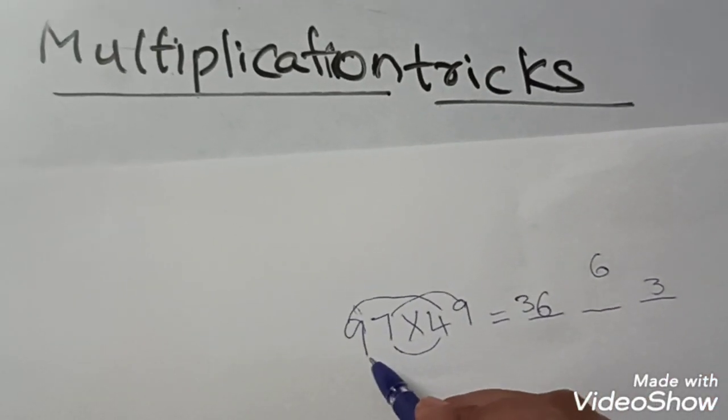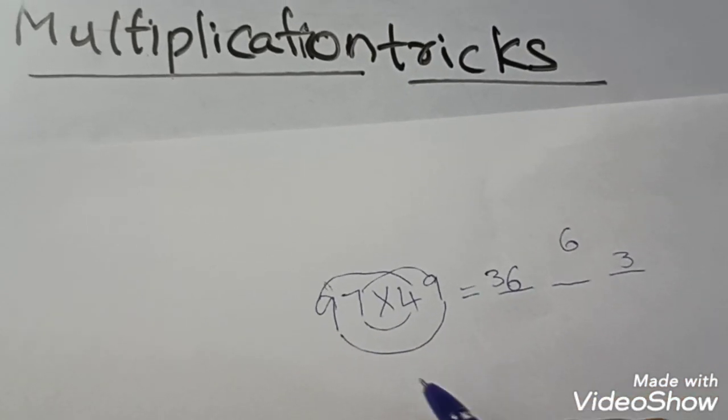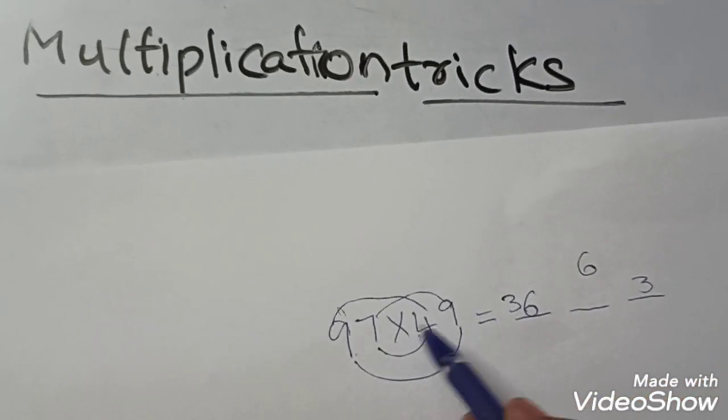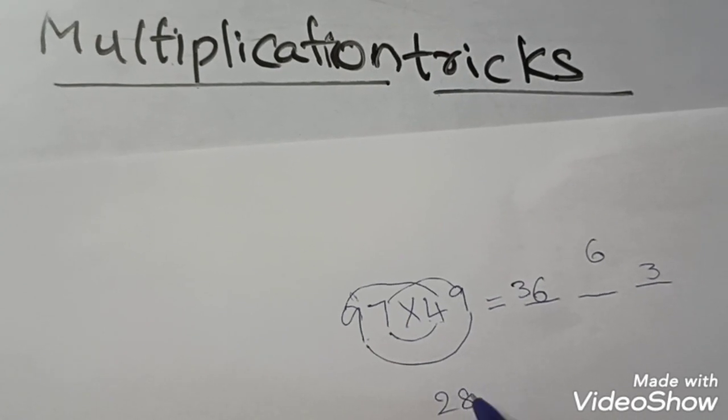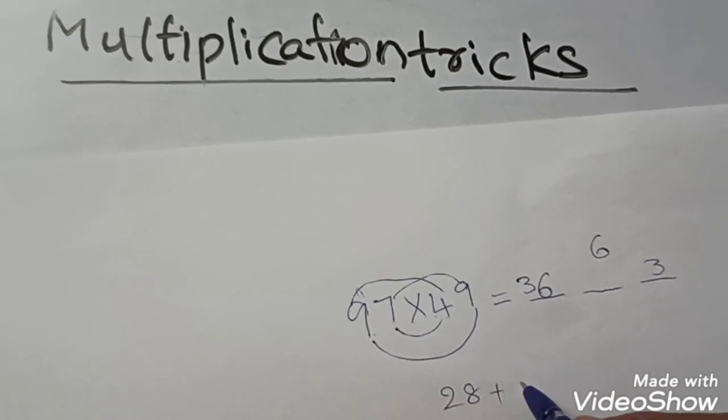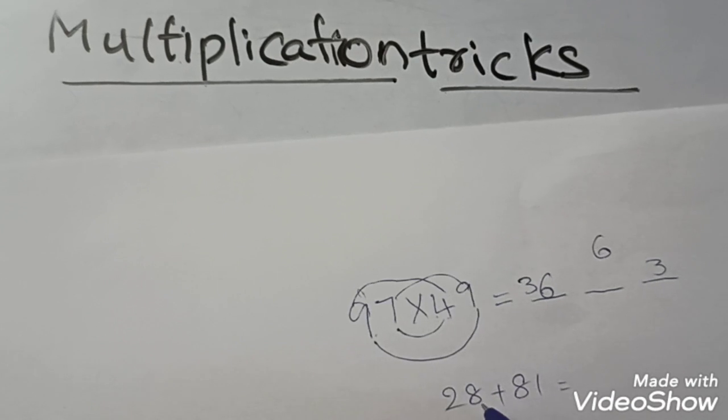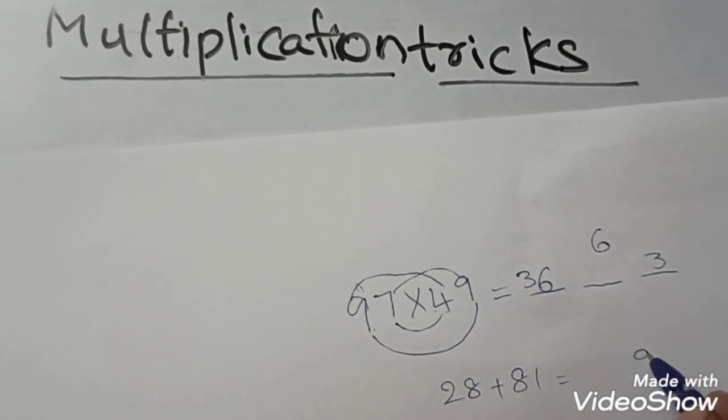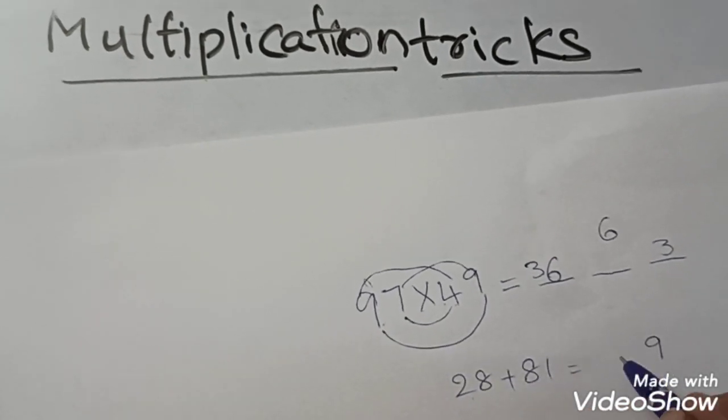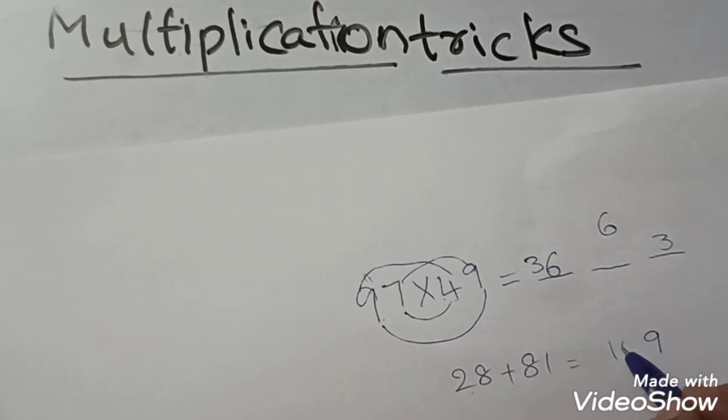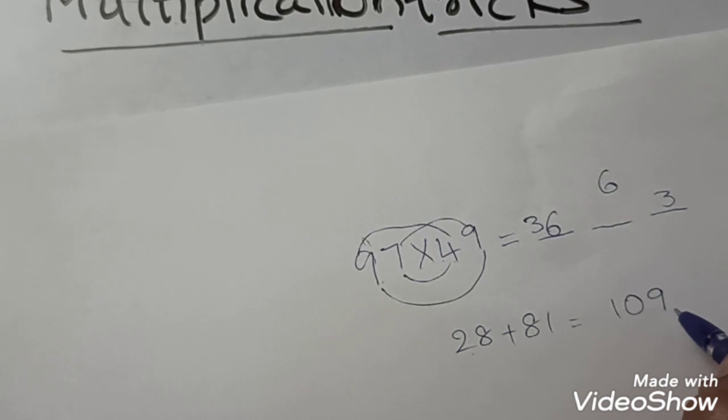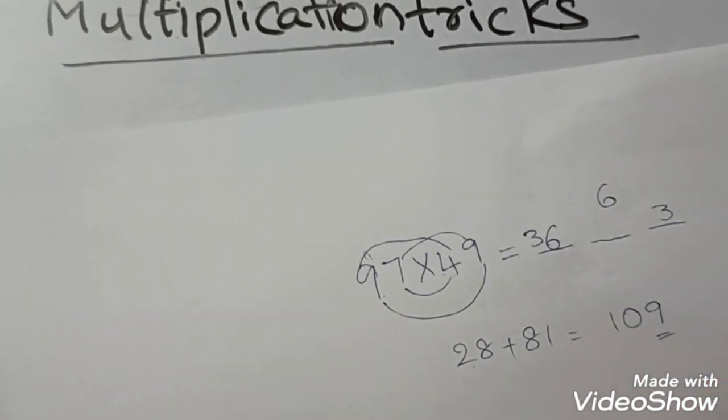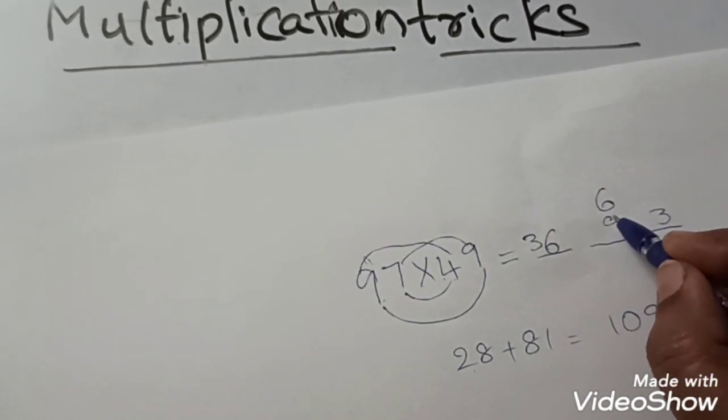Now we should multiply these two numbers and these two numbers. Seven fours are 28 plus nine nines are 81. 28 plus 81: 8 plus 1 is 9, 2 plus 8 is 10. Here we got 109. We should take the last digit and write here.